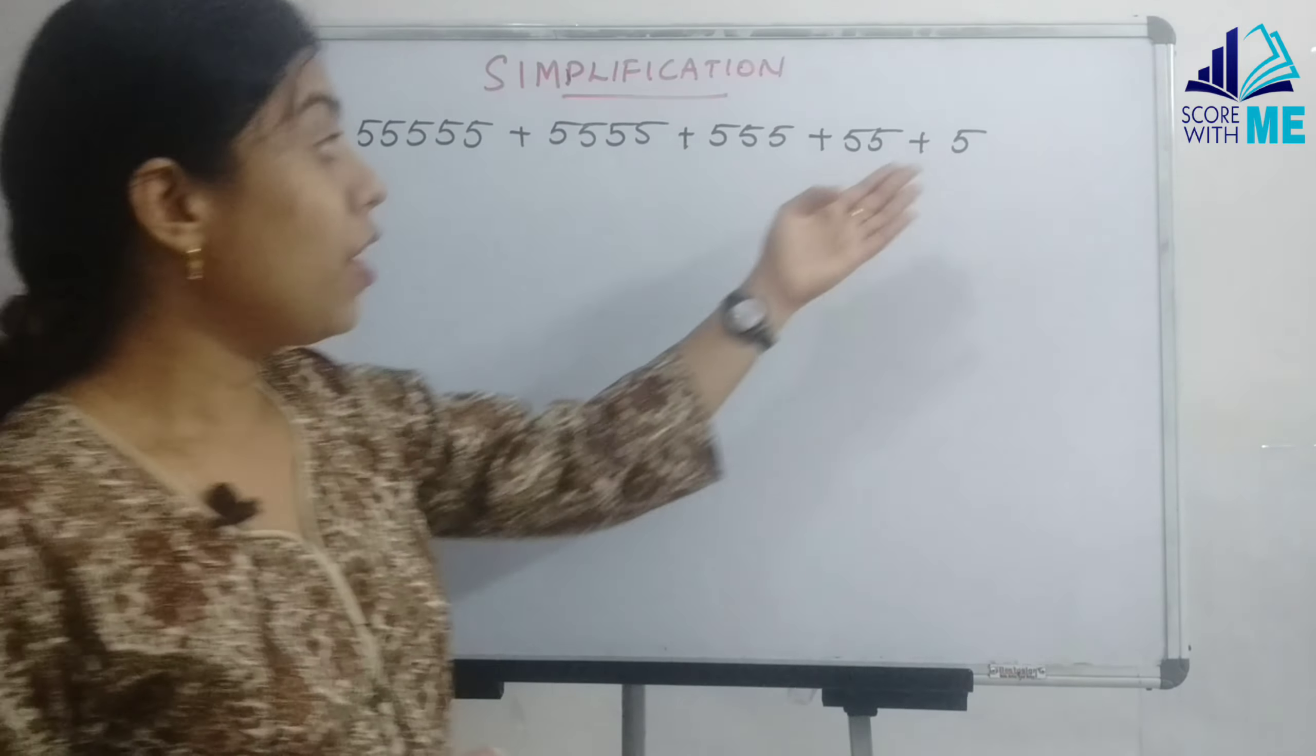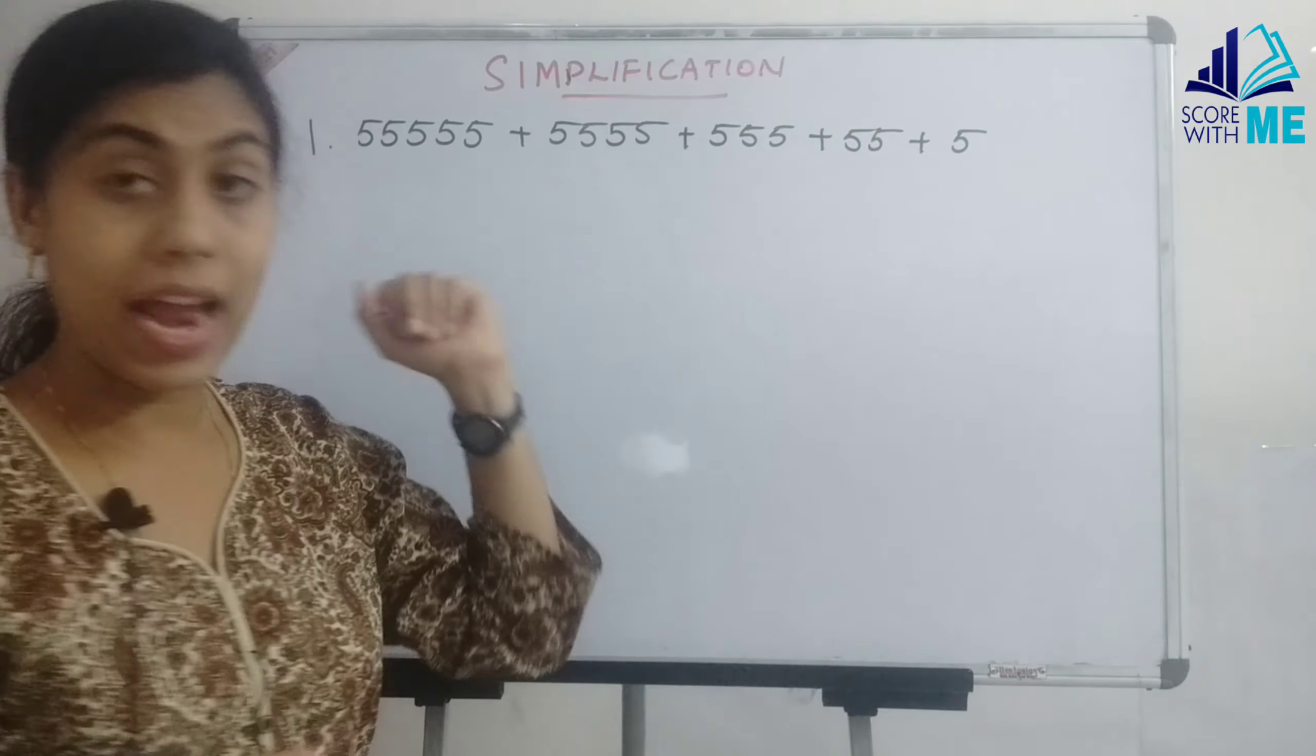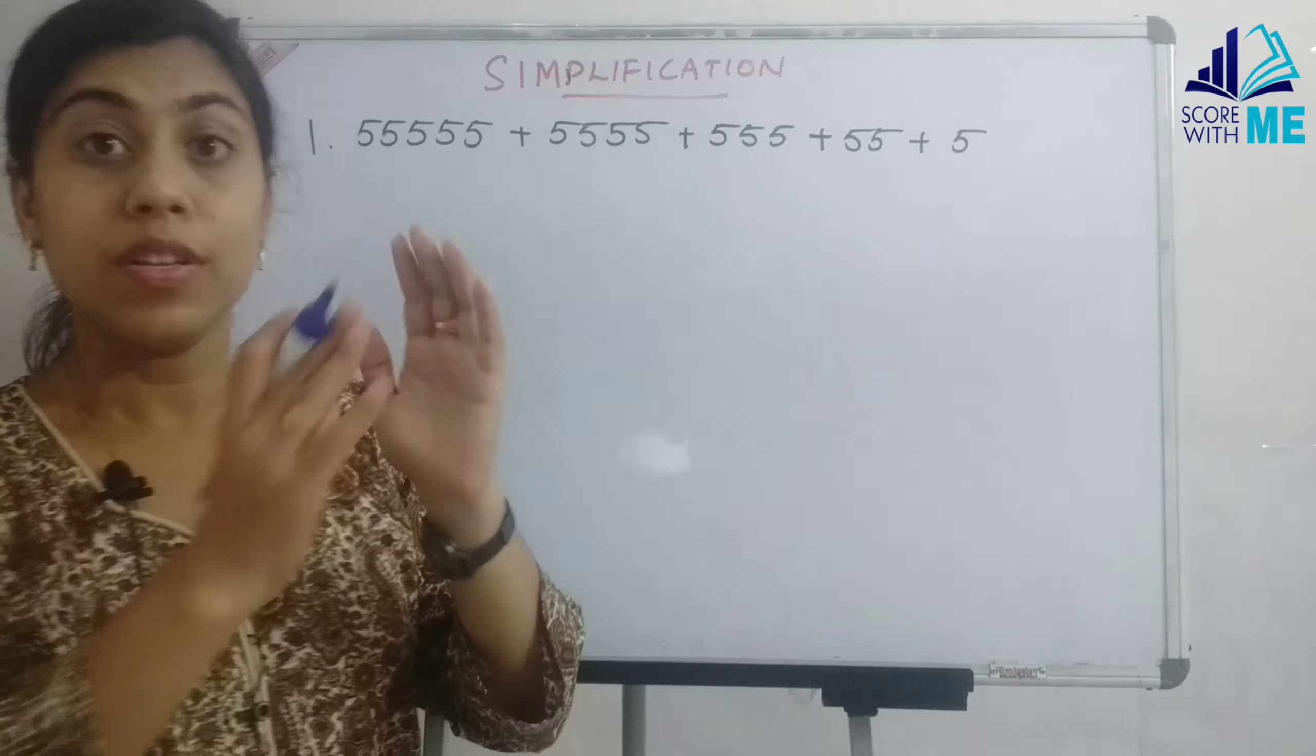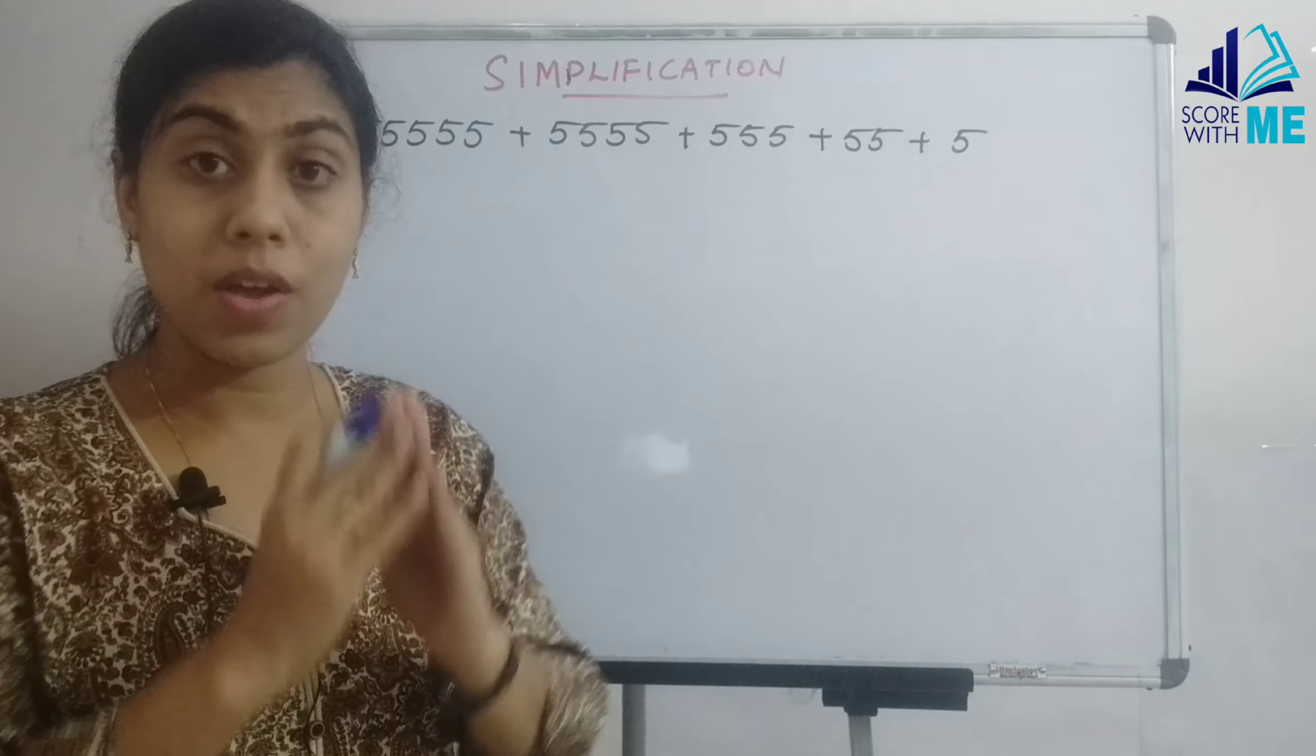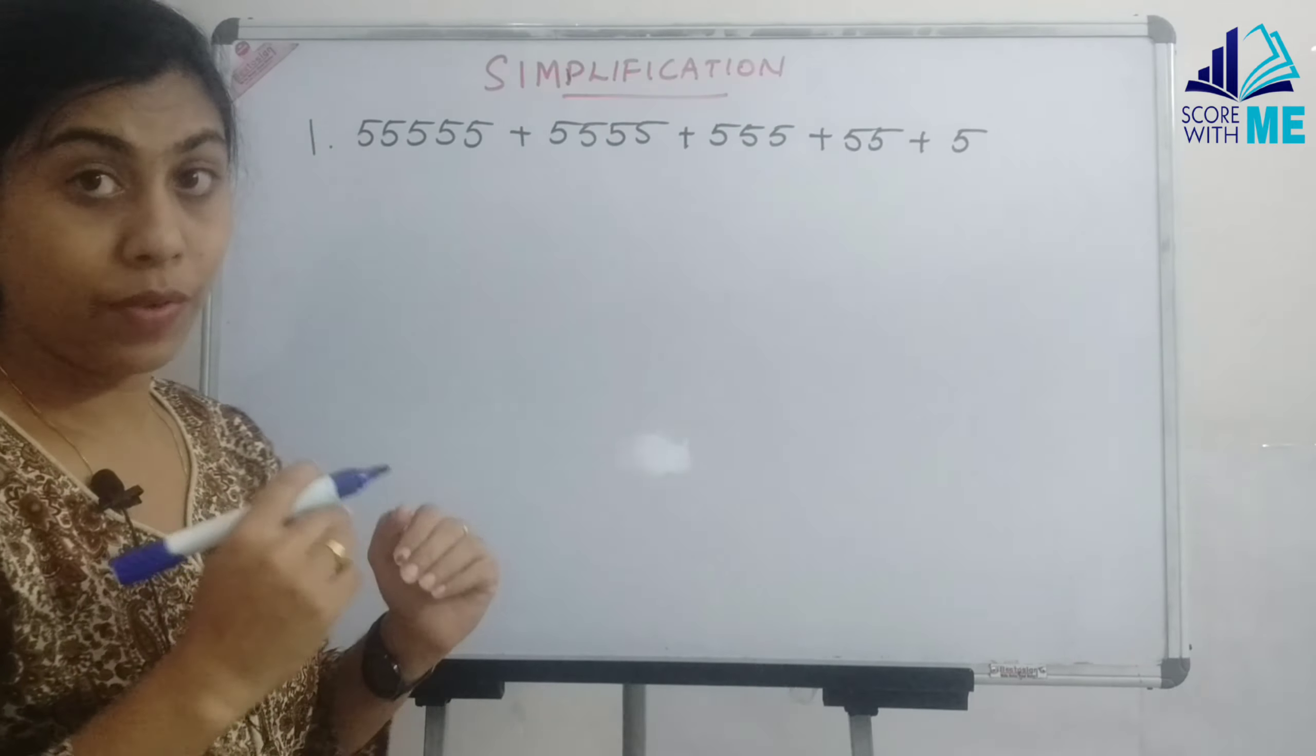So normally what do we do? We take all the ones digit and add them, we take the tens digit and add them, hundreds place and add them. But now we are not going to do that. What we are going to do is we are just going to count how many numbers of 5 we have got.